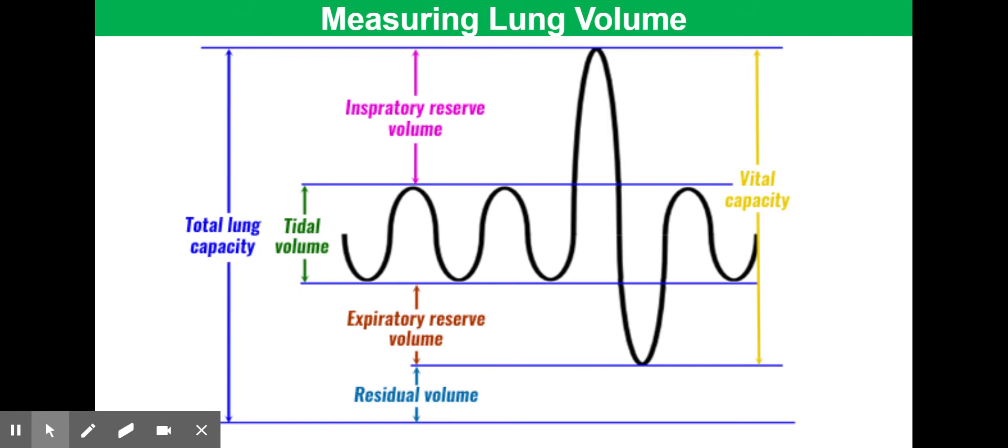The vital capacity is the maximum volume of air that can be moved by the lungs in a single breath. The way that this is measured is getting the patient to take a really deep breath and then exhale all the air they possibly can from the lungs. That vital capacity is going to depend on the age of the person, the gender of the person, the size of the person, the level of their activity.